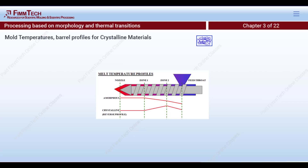Because residence time is a concern, once you soften the crystallites it's a good idea to drop the temperatures down a little so you're not subjecting the material to higher temperatures unnecessarily. Higher temperatures will accelerate degradation. This temperature profile — higher in the feed zone then reduced — is called a reverse profile.